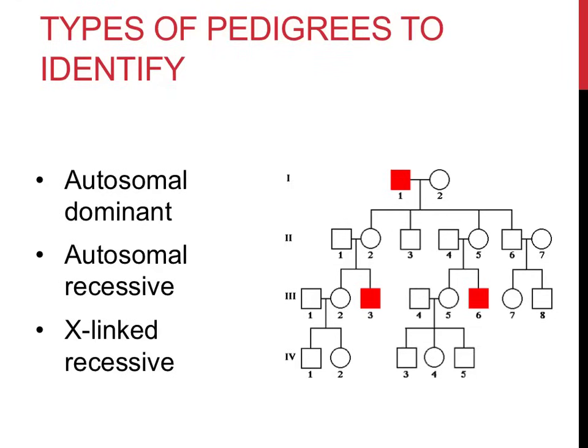Autosomal dominant — that is, dominant traits located on any chromosome except for the X and Y — is the first type. Autosomal recessive, traits that are recessive and located on any chromosome other than the sex chromosomes, are the second. And finally, you'll learn how to identify recessive traits that are located on the X chromosome.